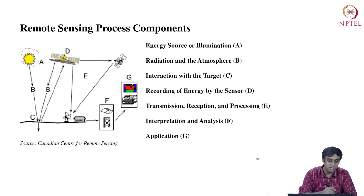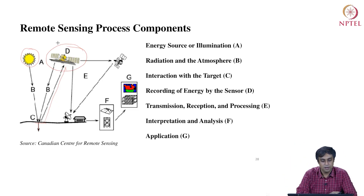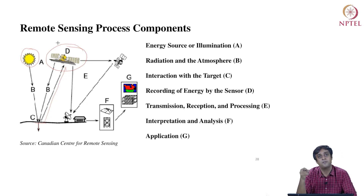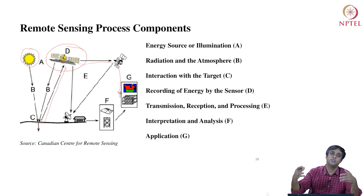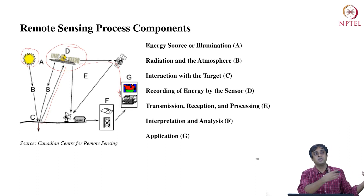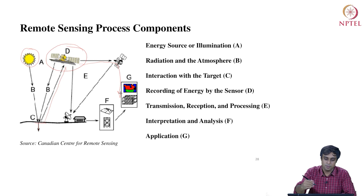A light source hits the earth's surface — the target. Some of the energy is absorbed and some is reflected back to the satellite sensor roaming in space. The sensor collects this information in terms of energy received after reflection from the earth's surface, which is finally received by a system on earth where it is processed, analyzed, manipulated, and stored. All the satellite imagery we saw in the first lecture went through this entire process.